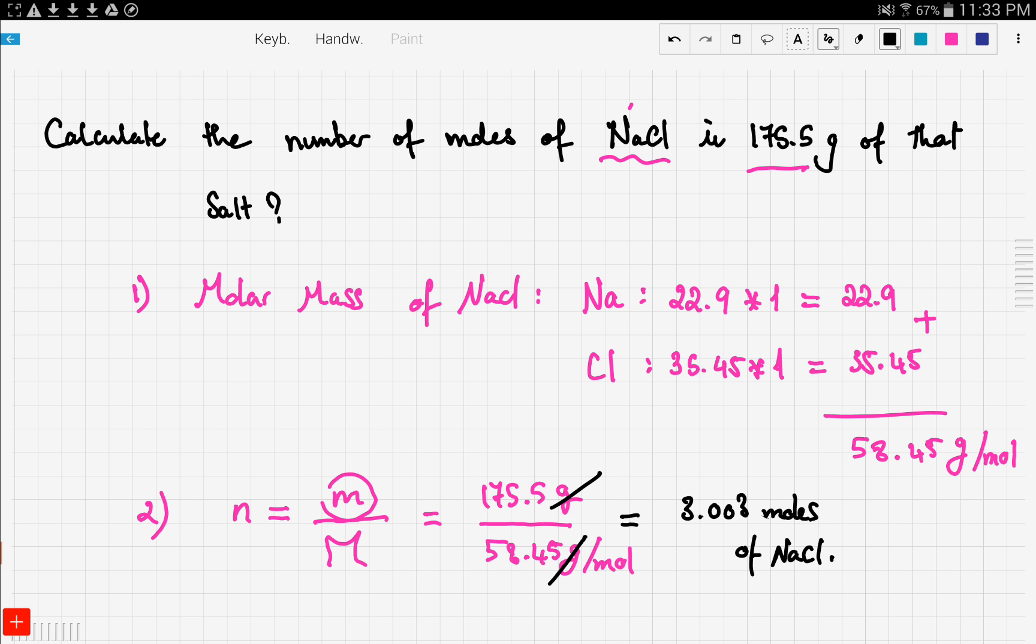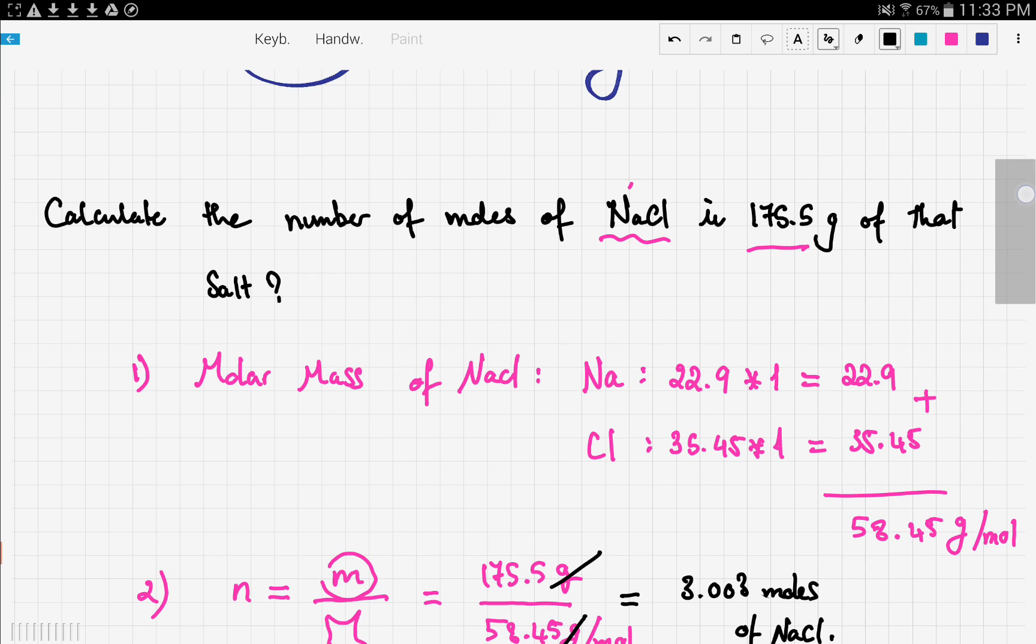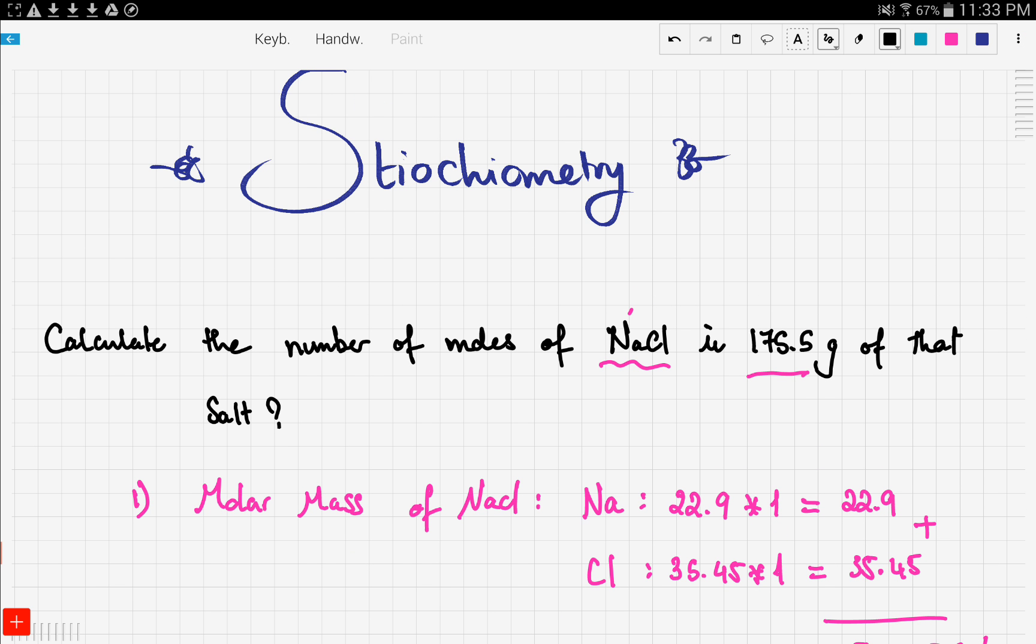So that's that for this video. I just wanted to go over a more complicated example and how we relate moles and molar mass together. Now the most important thing in this video is this relation, so the number of moles which we denote by n is equal to the mass, which is small m, over the molar mass which is big M.